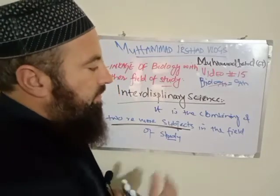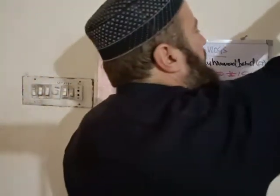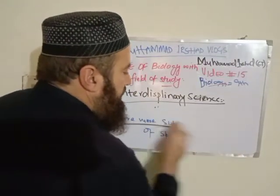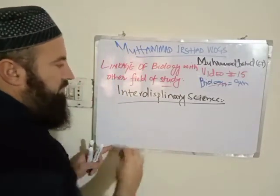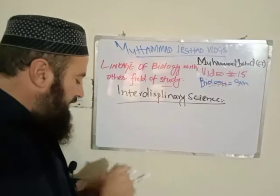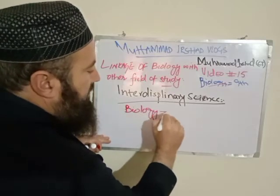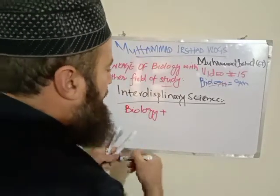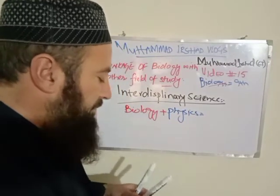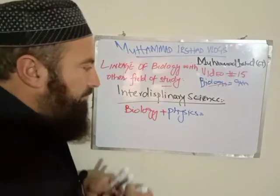With each other in the field of study, this is called interdisciplinary science. There is biology in the interdisciplinary science. For example, combining biology and physics gives us a new discipline.